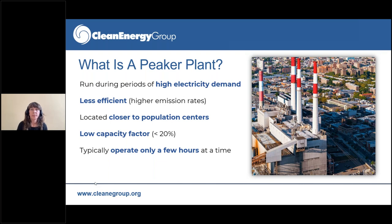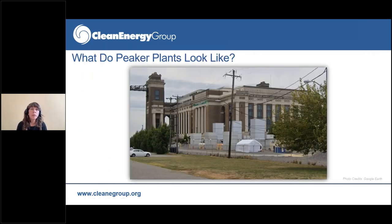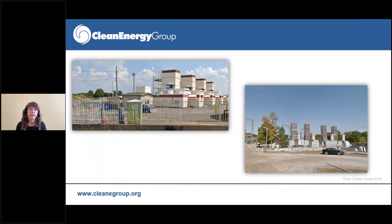What do peaker plants look like? They tend to be pretty surprising — a lot of people have no idea they have a peaker in their community. People might think a peaker looks like a big brick and limestone structure, but actually it's those little white boxes in the foreground. That is the Chester Peaker in Philadelphia, placed on the site of an existing power plant. Here are a couple more: the Delaware combustion turbine in Philadelphia with a colorful paint job, and the Superior gas turbine in Detroit. People often don't even know that these plants are in their neighborhoods and communities, emitting NOx.